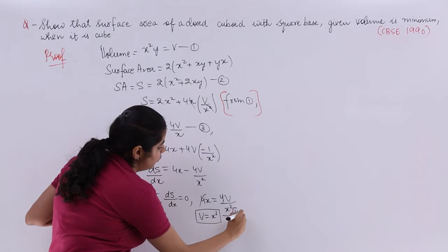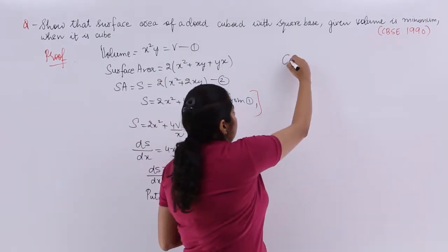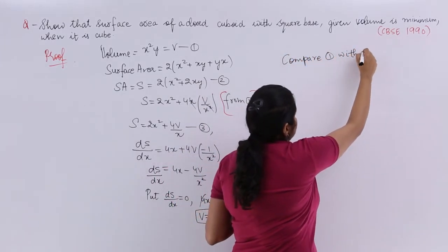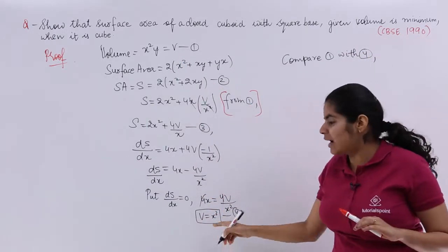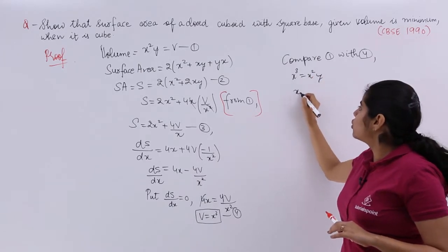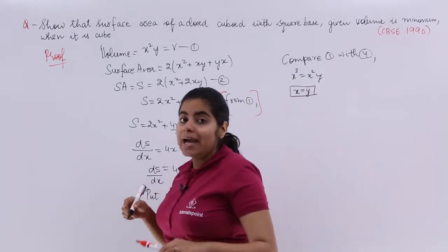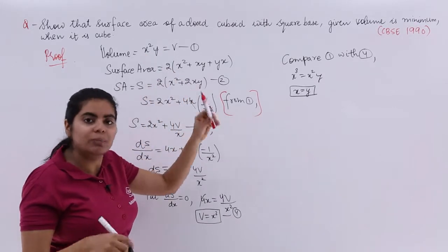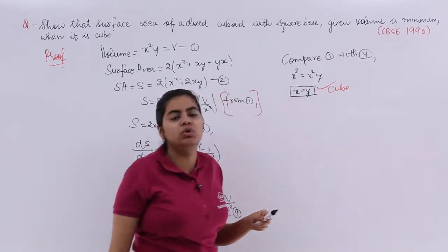This is your equation number 4. But when you compare 4 with 1, compare 1 equation with 4th equation. It is nothing but X square Y, it is X cube. So X cube is equal to X square Y or in short I have X is equal to Y. That means the square base it is talking about, X and Y are equal. X and Y are equal means X cube is the volume means it is a cube. So here only I have proved that all the edges are equal so it is a cube.